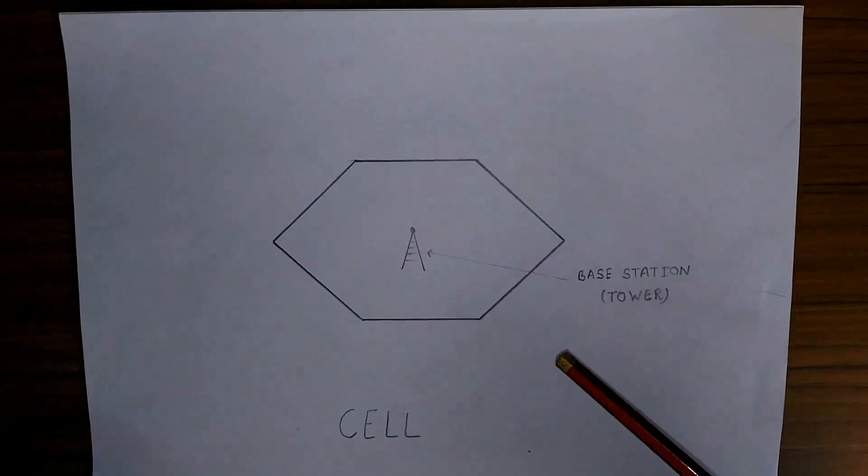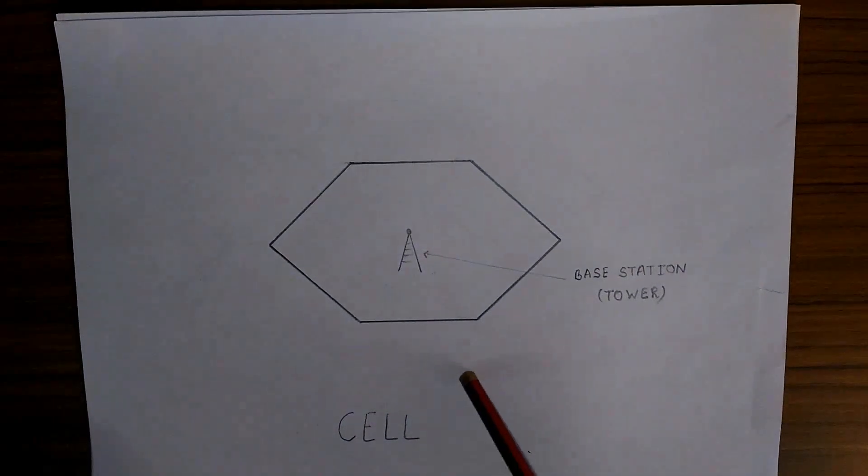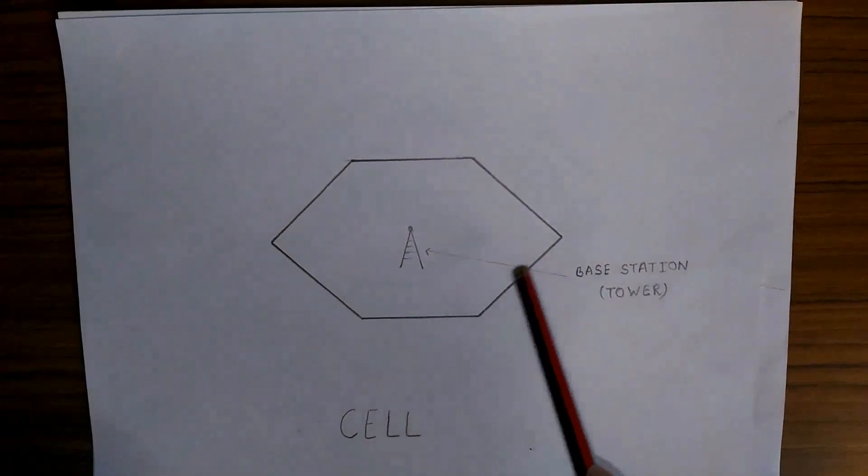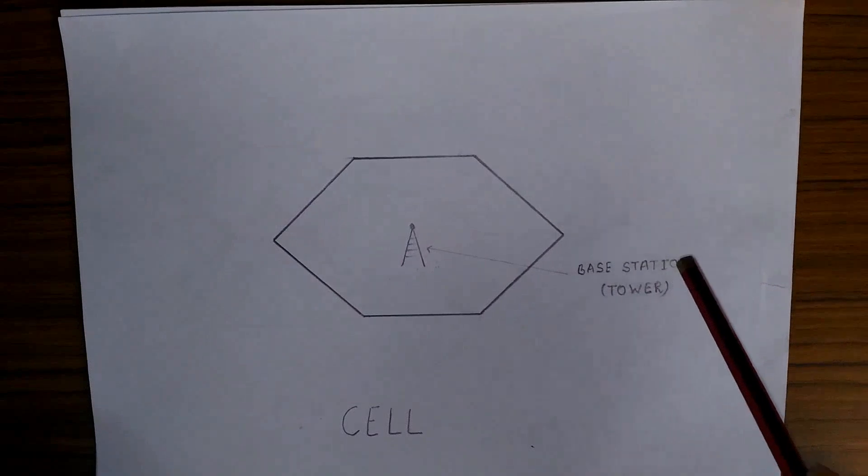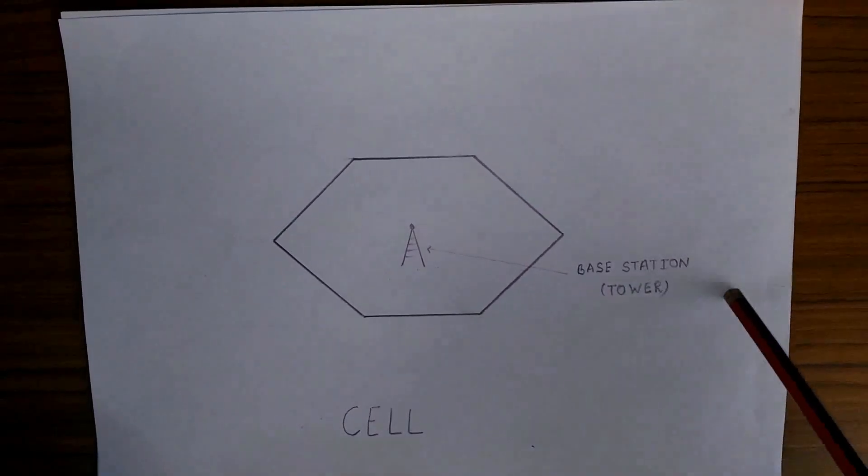First of all, to understand this, we have to know what a cell is. A cell is a hexagonal area covered by a base station. Now what is a base station? Basically, a base station is a mobile tower which we see in our surroundings.